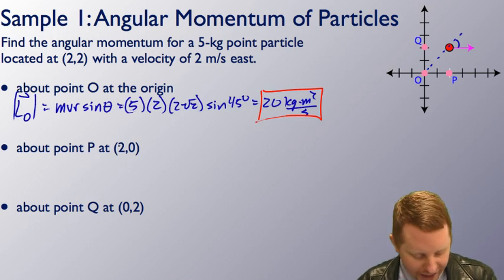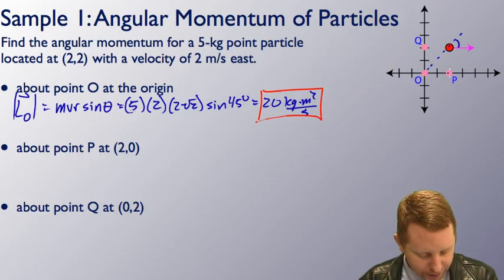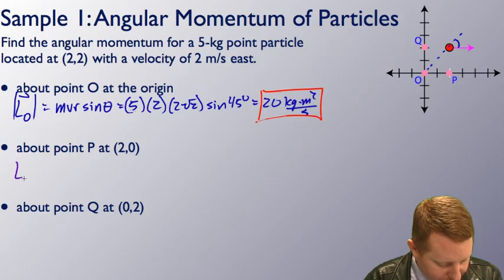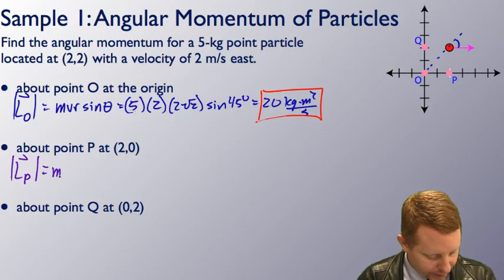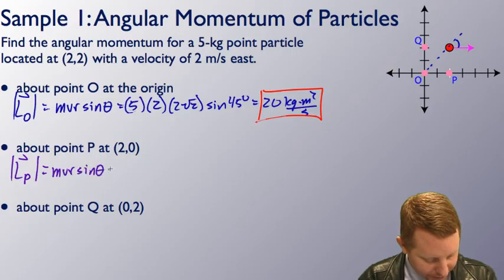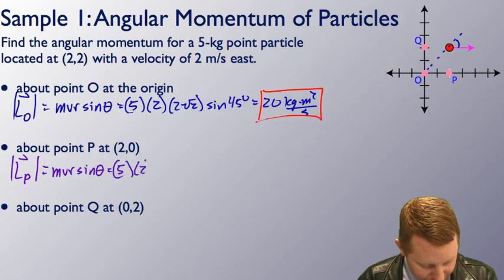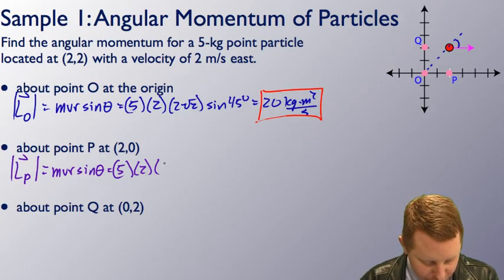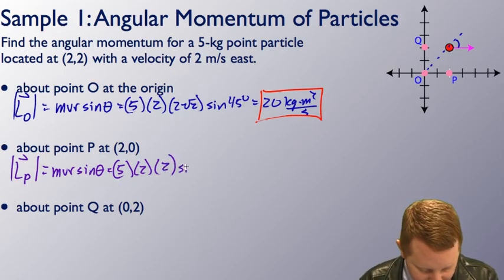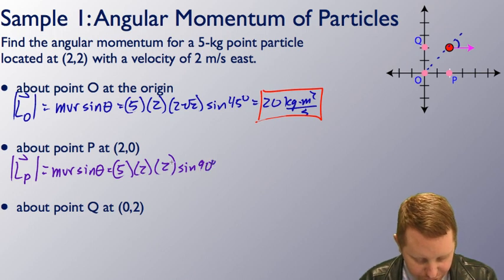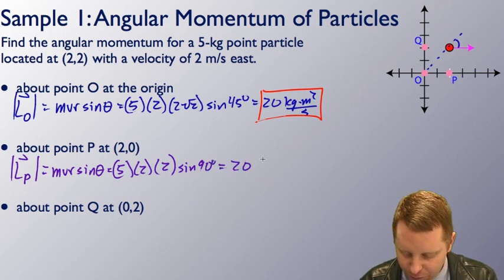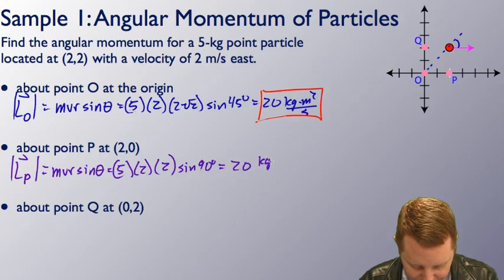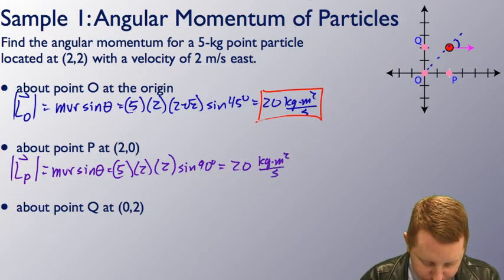Now to show the angular momentum about point P, which is at (2, 0), we find the magnitude equal to MVR sine theta again, where M is five, V is two, R from P to that point is just two meters, and our angle is 90 degrees. So five times two times two times sine 90 gives us 20 kilogram meters squared per second again.